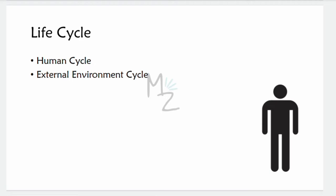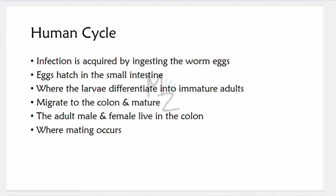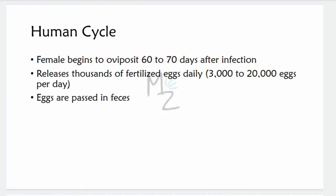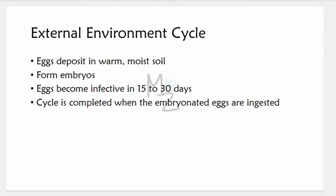The life cycle has two stages: the human cycle and the external environment cycle. In the human cycle, humans are infected by ingesting embryonated eggs in food or water contaminated with human feces. The eggs hatch in the small intestine where larvae differentiate into immature adults. These immature adults migrate to the colon where they mature, mate, and produce thousands of fertilized eggs daily. The female begins oviposition — that is, laying eggs — 60 to 70 days after infection, at a rate of 3,000 to 20,000 eggs per day. These eggs are then passed in the feces.